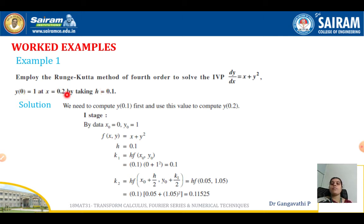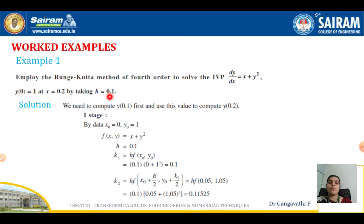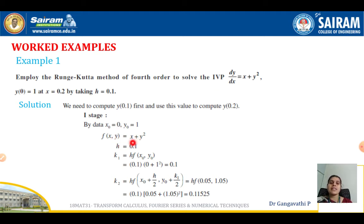We need to compute y(0.1) first, then use that value to compute y(0.2). Consider stage 1 at x = 0.1 and stage 2 at x = 0.2. Given x₀ = 0, y₀ = 1, f(x, y) = x + y², h = 0.1. For k₁ = h·f(x₀, y₀): h is 0.1, replace x by x₀ and y by y₀ in f(x, y) = x + y², giving x₀ + y₀² = 0 + 1 = 1, so k₁ = 0.1.